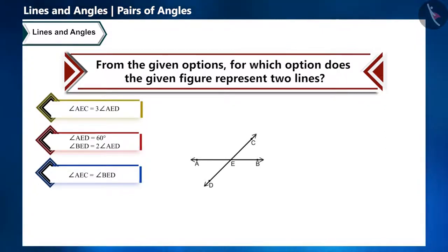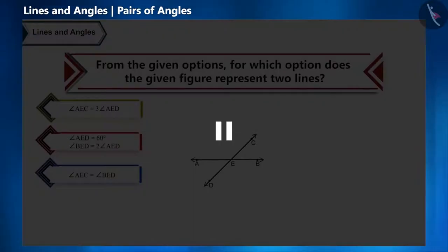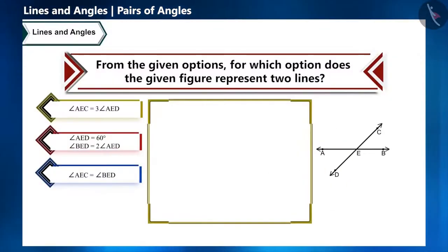You can pause the video to think about the answer. Here, when can AE and CD be lines? When the opposite angles will be vertically opposite angles. And from the given options, which option depicts the vertically opposite angles?